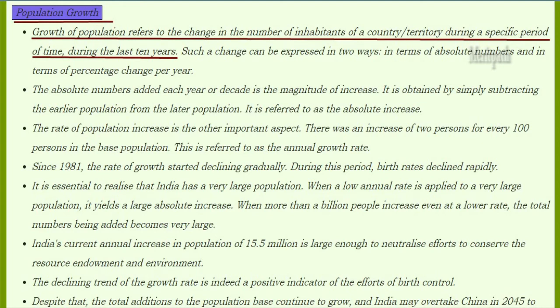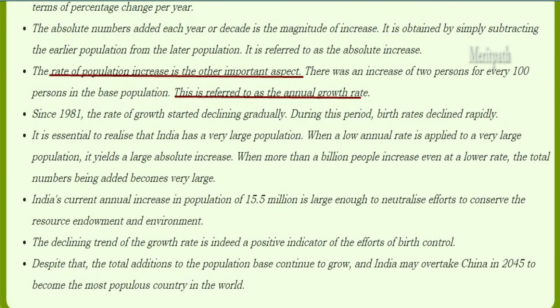Such change can be expressed in two ways: in terms of absolute numbers and in terms of percentage change per year. Absolute numbers added each year or decade represent the magnitude of increase. It is obtained by simply subtracting the earlier population from the later population, and this is termed absolute increase.